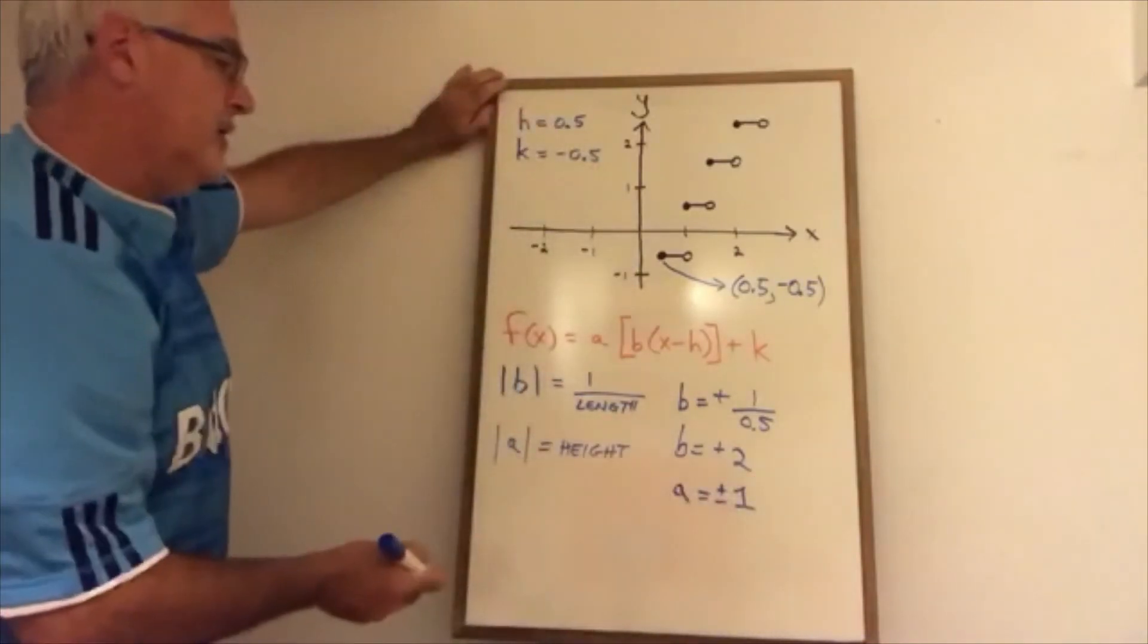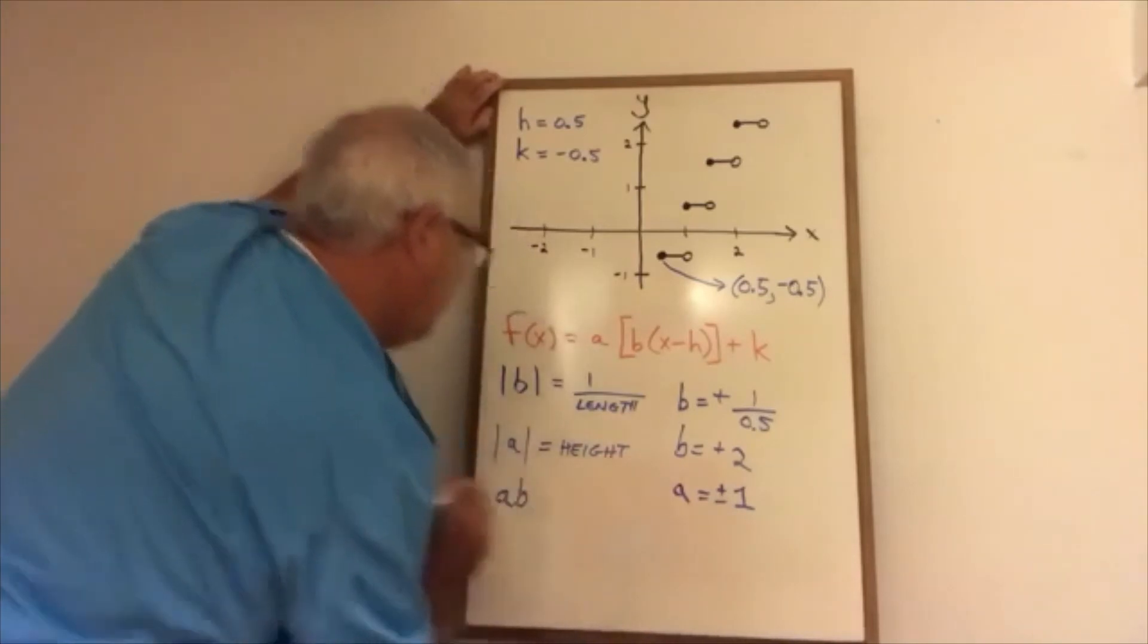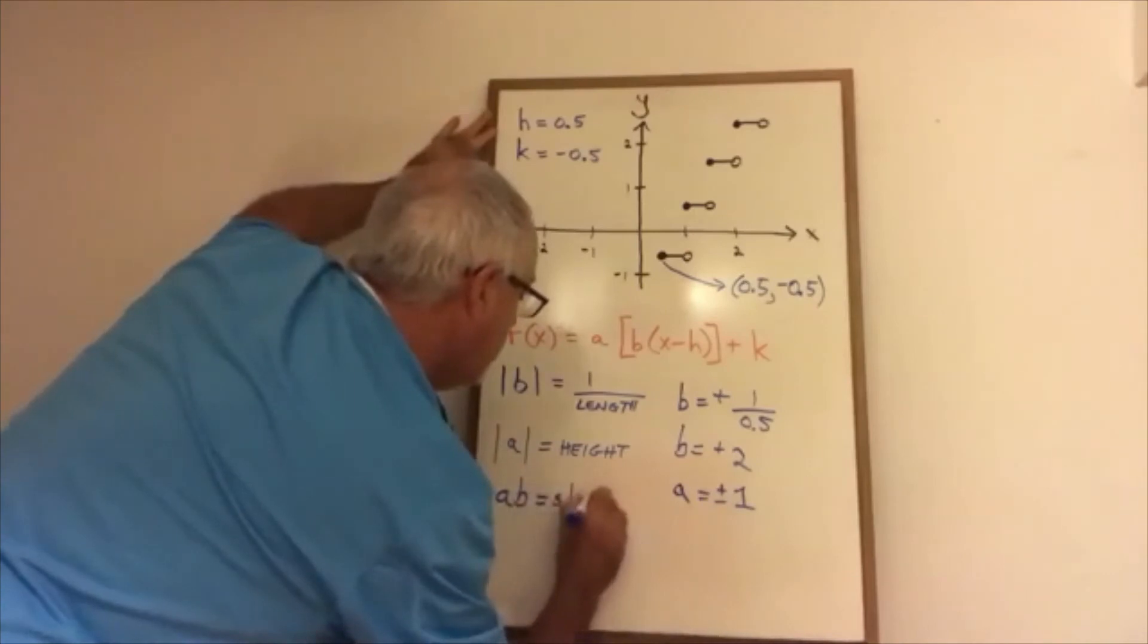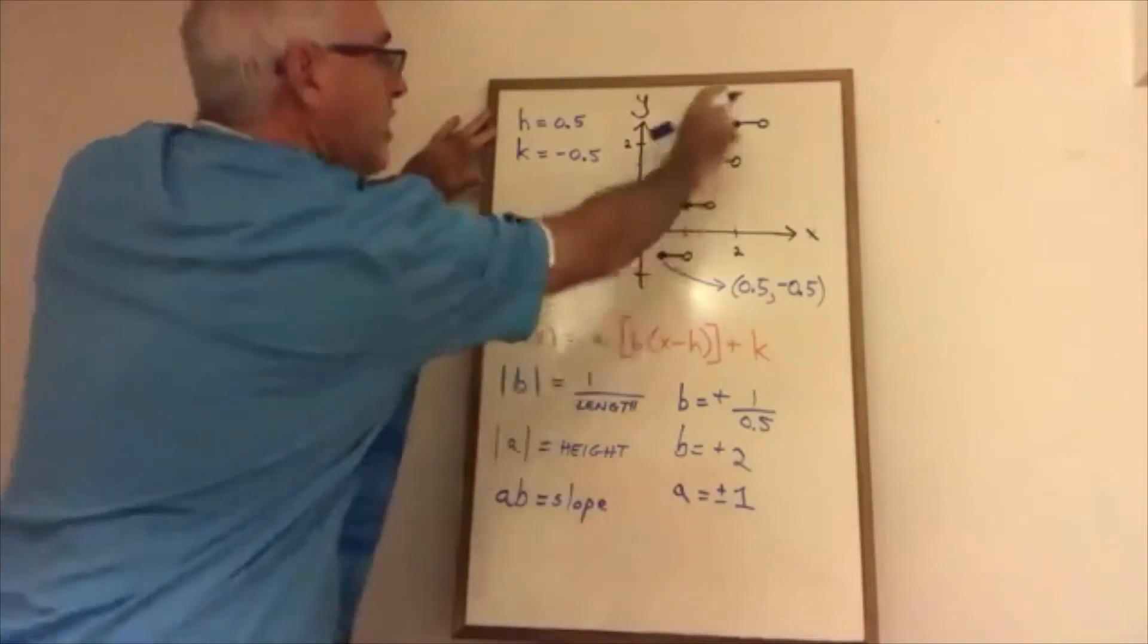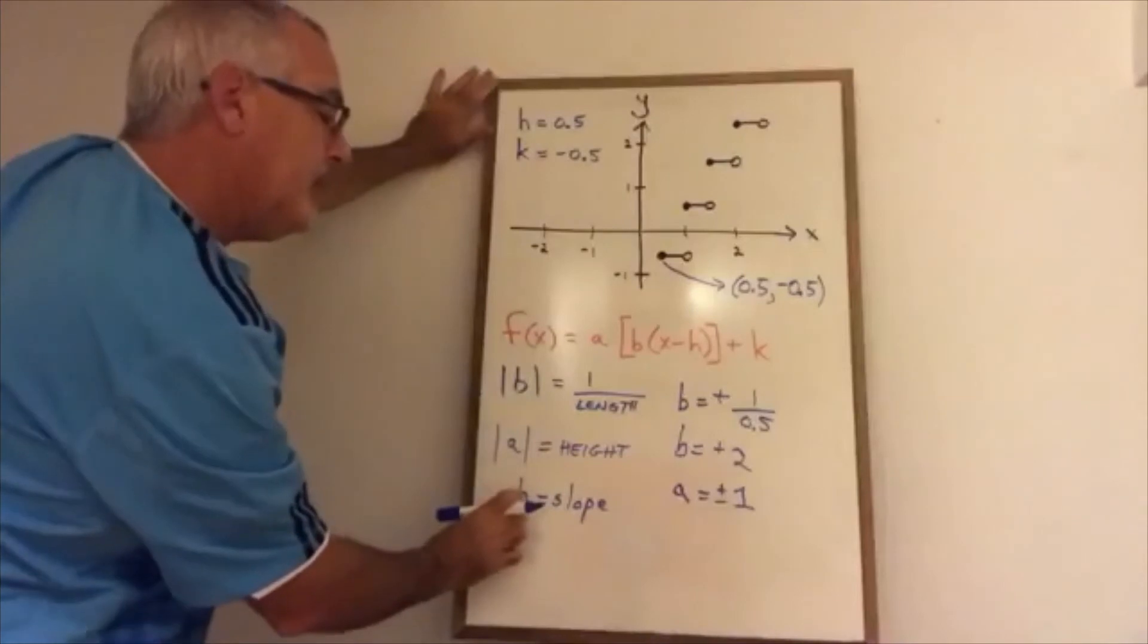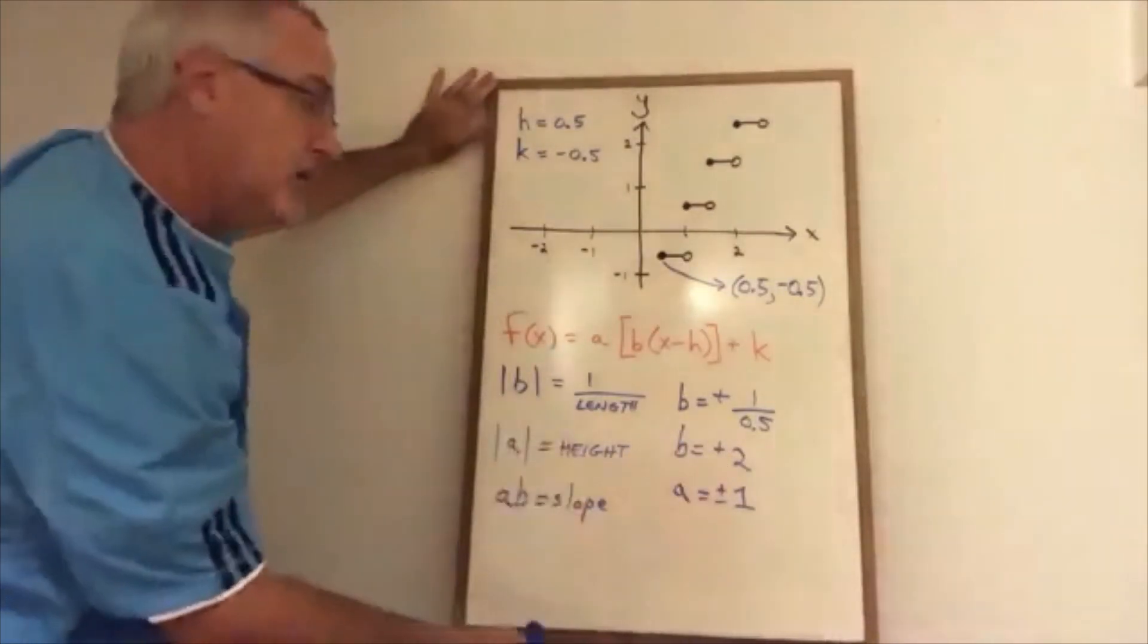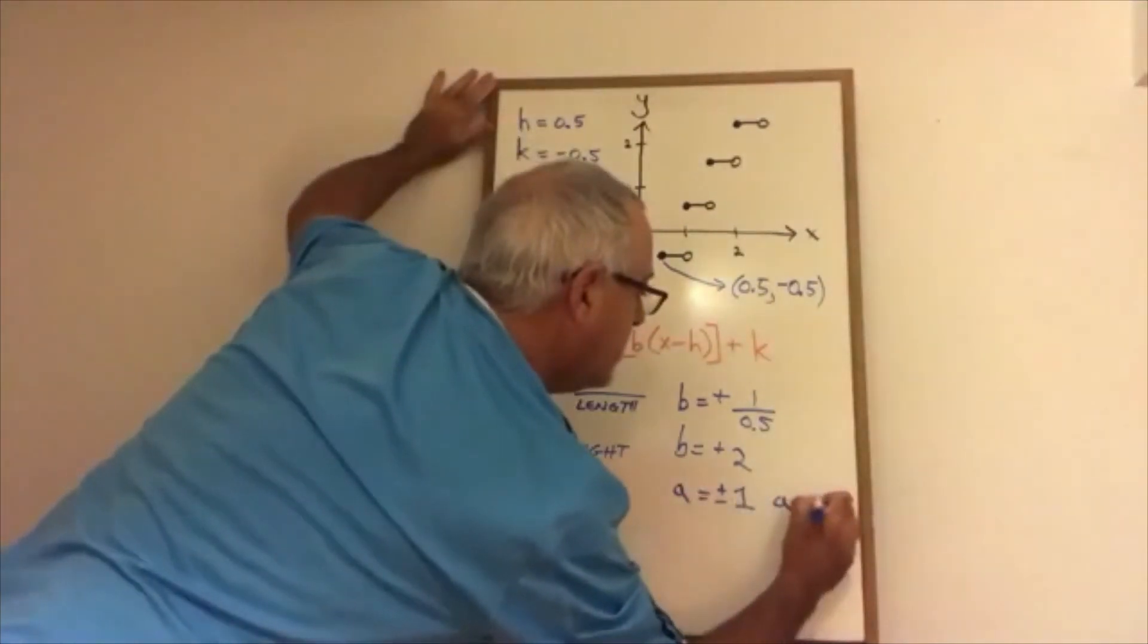I need to know whether it's positive or negative. And for that I need to use the fact that ab, the product of a and b, gives me the slope of the imaginary line that goes through all the closed circles. I can see that that slope would be positive. So therefore the product of a and b has to be positive. Since b is positive 2, a has to also be positive. Therefore a equals positive 1.